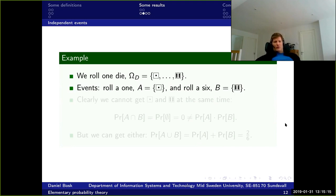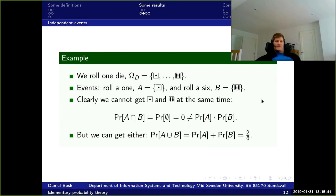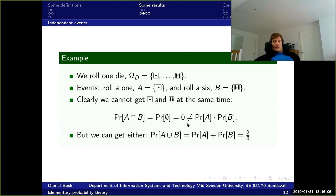Say we roll one die — the sample space is the outcomes of the die. Event A is rolling a one, and event B is rolling a six. Clearly we cannot get one and six at the same time, which means the probability of getting both simultaneously is zero. But the probability of A times the probability of B is not zero, so A and B are not independent events.